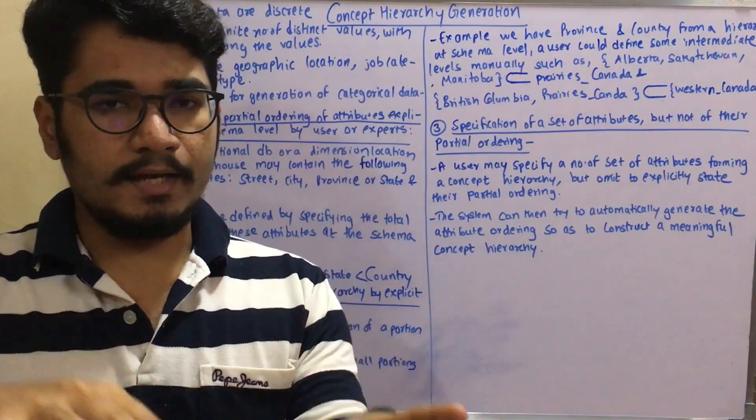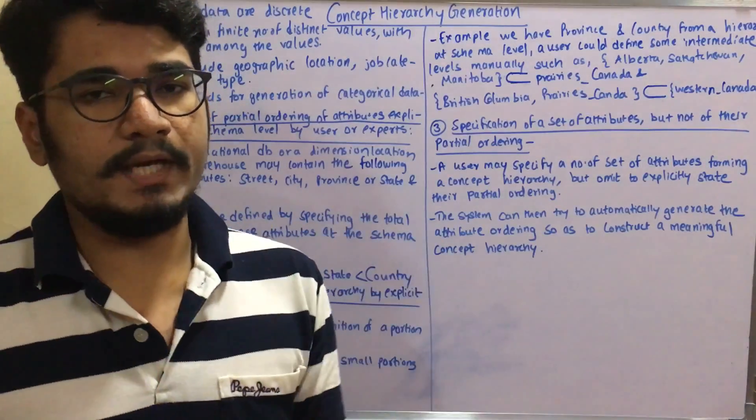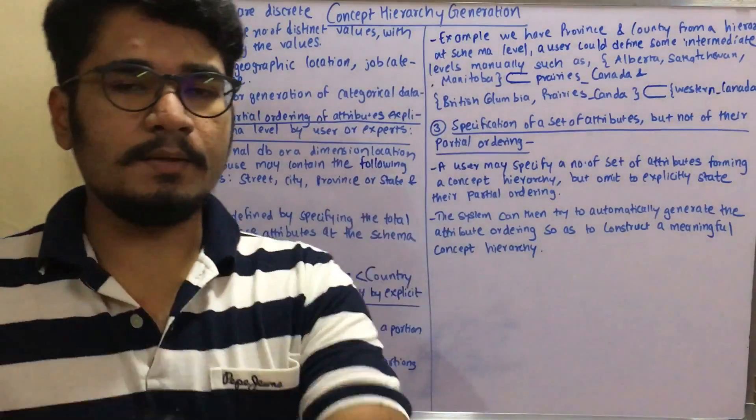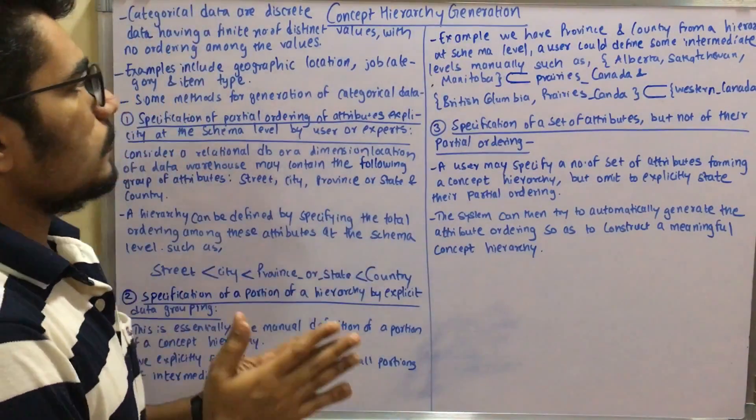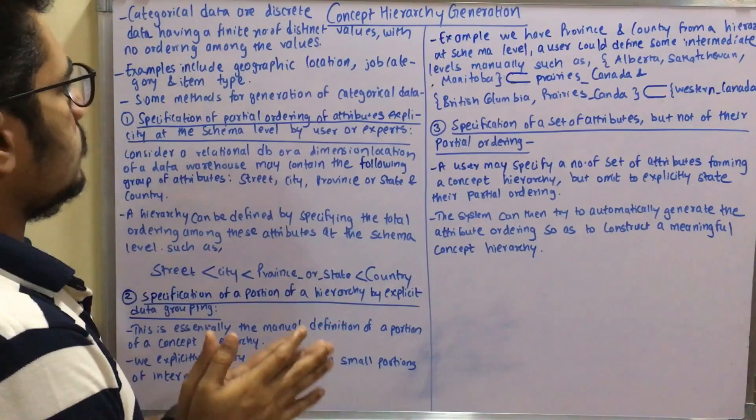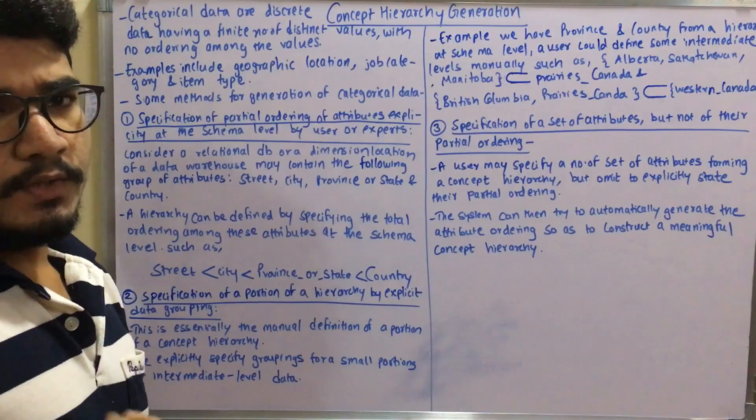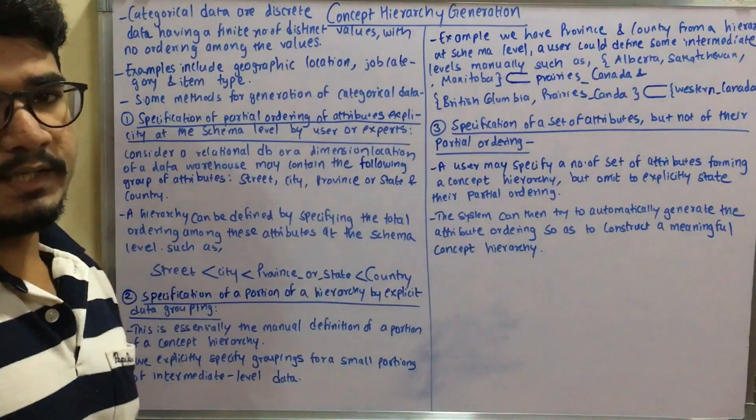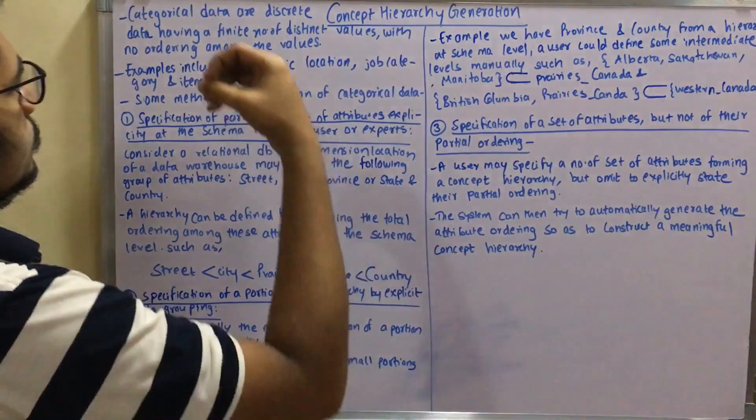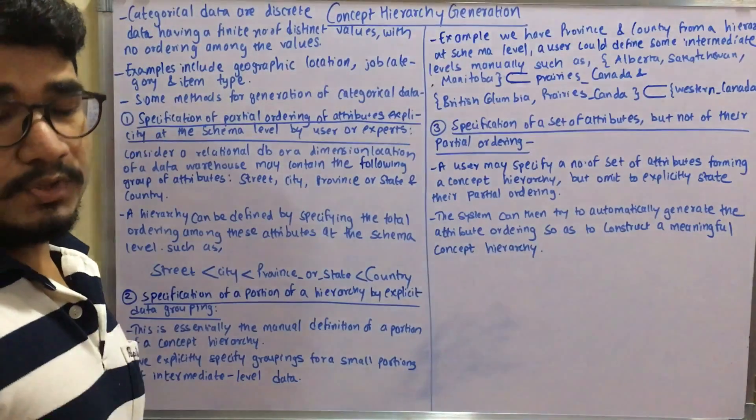This is a small part of data discretization and concept hierarchy generation. It's a very easy concept. We have different kinds of categorical data - spatial data, discrete data, and distributed data.